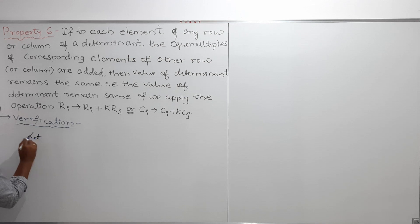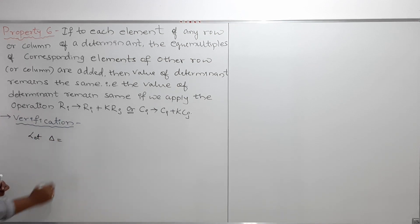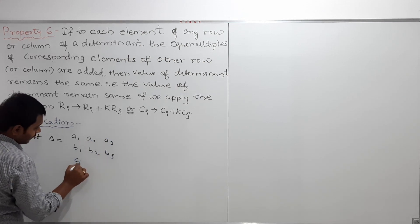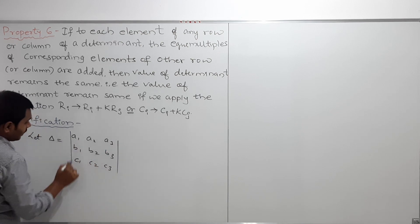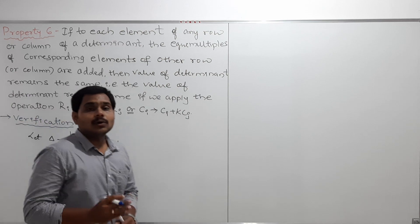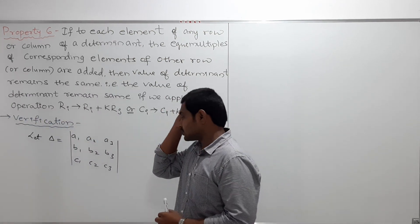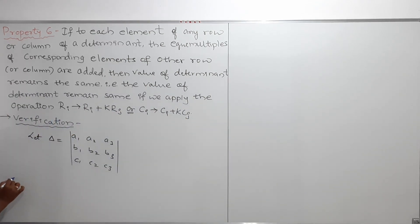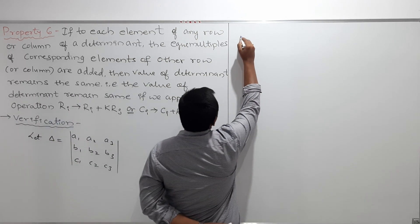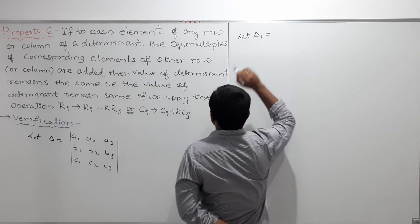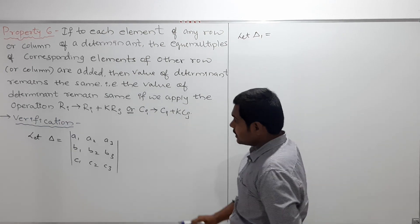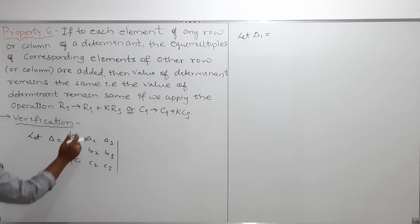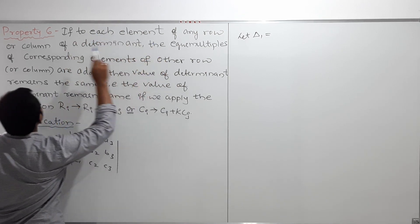To understand this statement, let us take an example. Let delta be equal to the determinant with elements a1, a2, a3 in row one; b1, b2, b3 in row two; and c1, c2, c3 in row three. Now, the meaning of the statement is: I will consider one determinant, and I will define delta one by performing an operation on it.